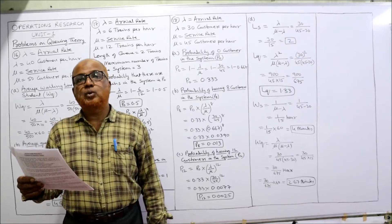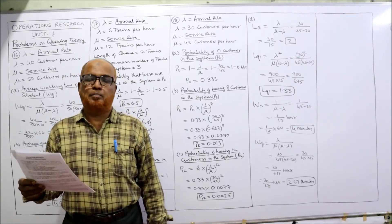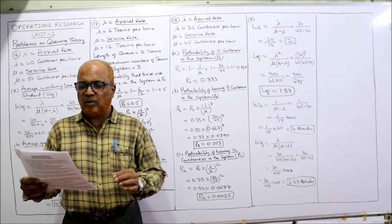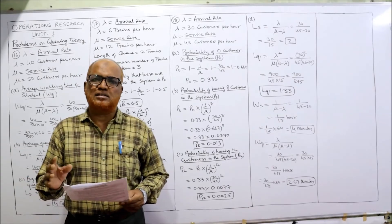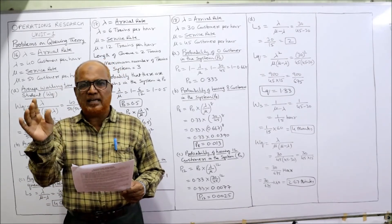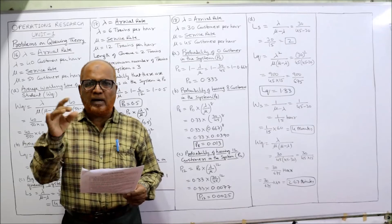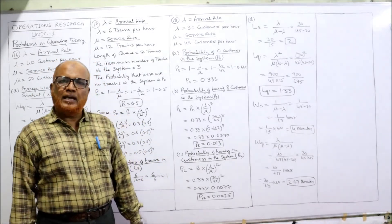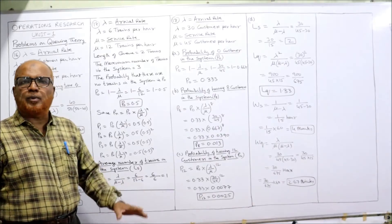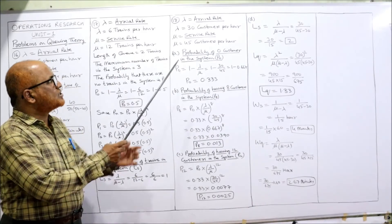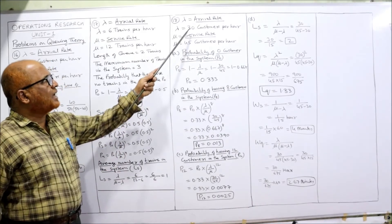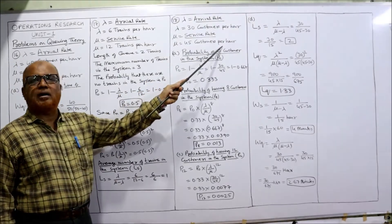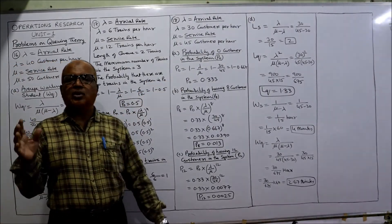What is the probability of having 12 customers — P(12)? And find LS, LQ, WS, and WQ. Straightforward — very easy problem. This is the last and final problem on queuing theory. Arrival rate is 30 customers per hour and service rate is 45 customers per hour.